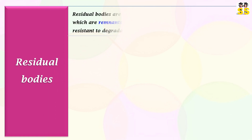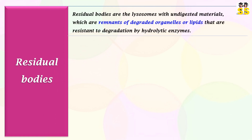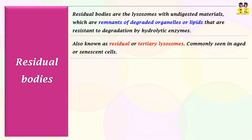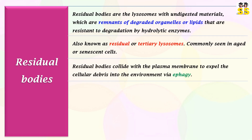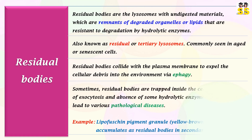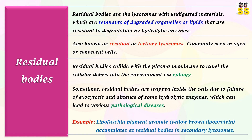Residual bodies are lysosomes with undigested materials, such as remnants of degraded organelles or lipids that are resistant to degradation by hydrolytic enzymes. They are also known as residual or tertiary lysosomes and are commonly seen in aged or senescent cells. Residual bodies collide with the plasma membrane to expel cellular debris into the environment. Sometimes residual bodies are trapped inside the cells due to malfunctions — either failure of exocytosis or absence of some hydrolytic enzymes — and cause various pathological diseases. Lipofuscin pigment granule is a yellow-brown lipoprotein that accumulates as residual bodies in secondary lysosomes.